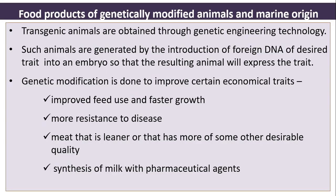Transgenic animals are obtained through genetic engineering technology. Such animals are generated by the introduction of foreign DNA of a desired trait into the embryo so that the resulting animal will express that trait. Genetic modification is done to improve economic traits like improved food use, faster growth, more resistance to disease, leaner meat, or other desirable qualities.